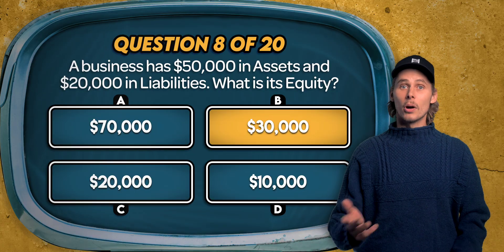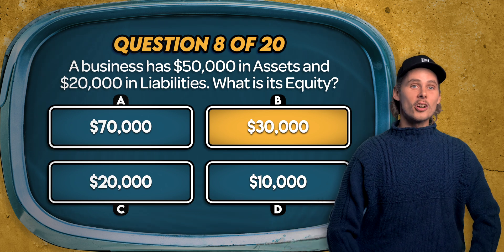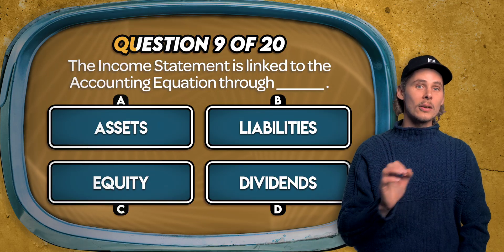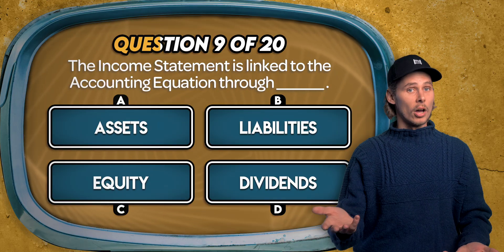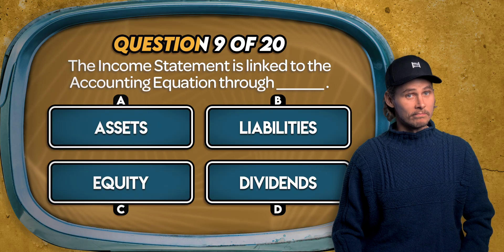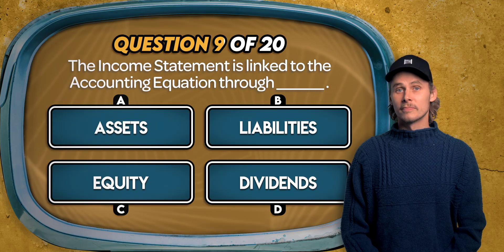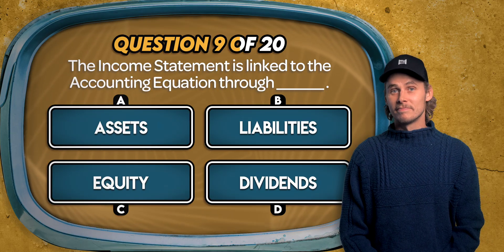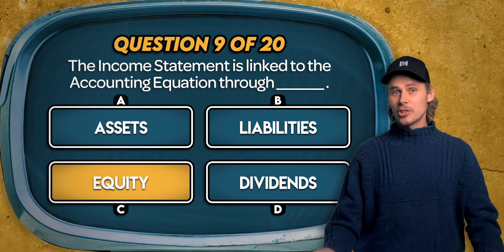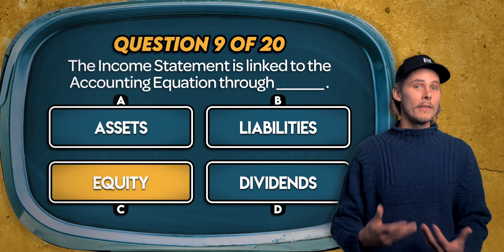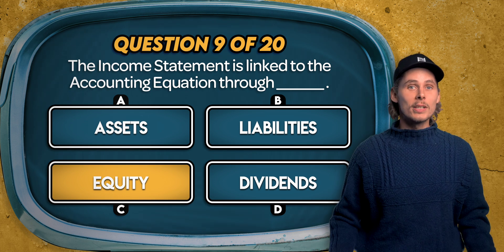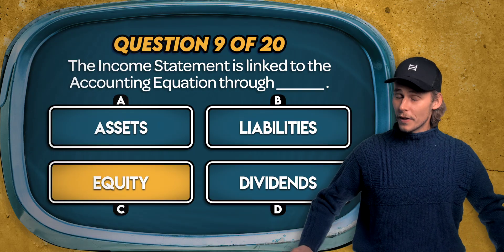Question 9. The income statement is linked to the accounting equation through assets, liabilities, equity, or dividends? The answer is C. The income statement shows a business's revenues and expenses which are used to calculate net profit. Net profit increases retained earnings, which is a component of equity.